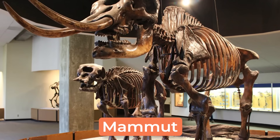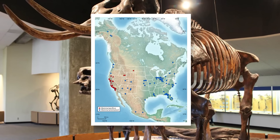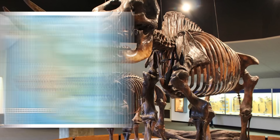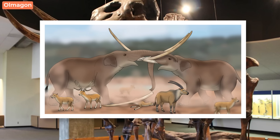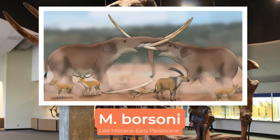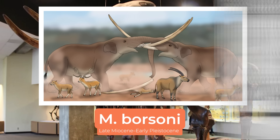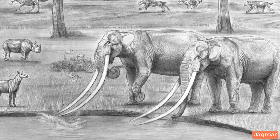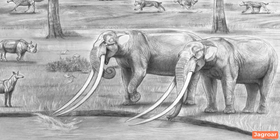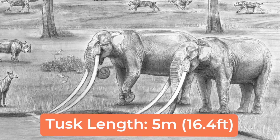Mammut is the final genus of Mammutidae, and easily the genus of Mastodon we know most about. This genus first evolved during the late Miocene and was primarily a North American genus. That's not to say there weren't any species found outside the continent. Mammut borsoni was a giant Mastodon that lived from the late Miocene to the early Pleistocene, found from the Iberian Peninsula to Ukraine. This species was notable for having the longest tusks of any animal to have ever lived — almost comically large teeth measuring 5 meters or 16 feet long. For reference, that's longer than the animal was tall.